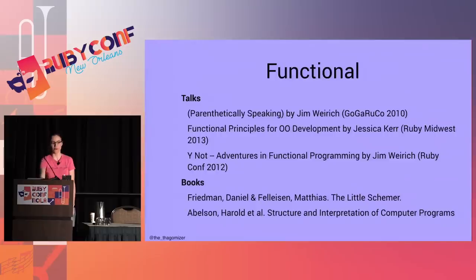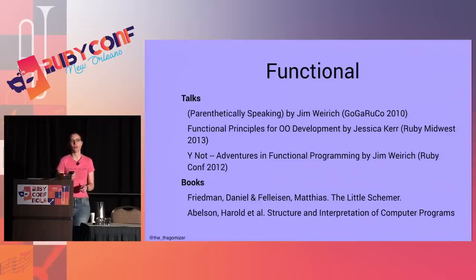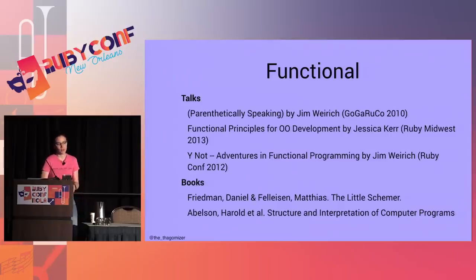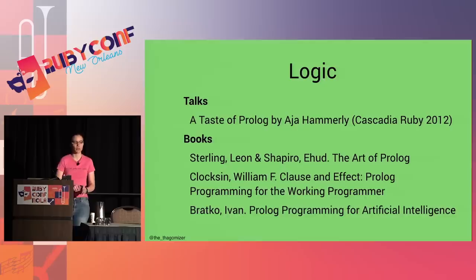Where to learn more: for functional programming, talks by Jim Weirich including his 'Why Not: Adventures in Functional Programming' keynote from RubyConf 2012. Friedman and Felleisen have The Little Schemer, The Reasoned Schemer, and The Seasoned Schemer — fantastic books written in Socratic dialogue. The Structure and Interpretation of Computer Programs is a large textbook on fundamentals of computer science from a functional perspective. I also gave a talk at Cascadia Ruby 2012 on Prolog — a 45-minute version that's easier to follow.